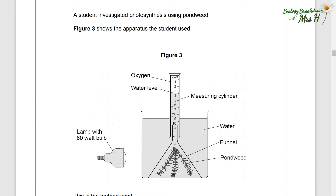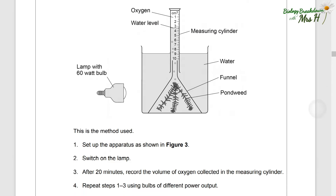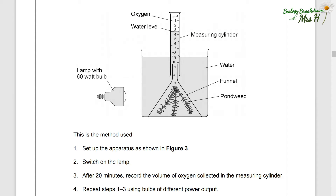A student investigated photosynthesis using pondweed. This is our required practical six. Figure three shows the apparatus the student used. This is the method used: set up the apparatus as shown in figure three, switch on the lamp. After 20 minutes, record the volume of oxygen collected in the measuring cylinder and repeat steps one to three using bulbs of different power output.